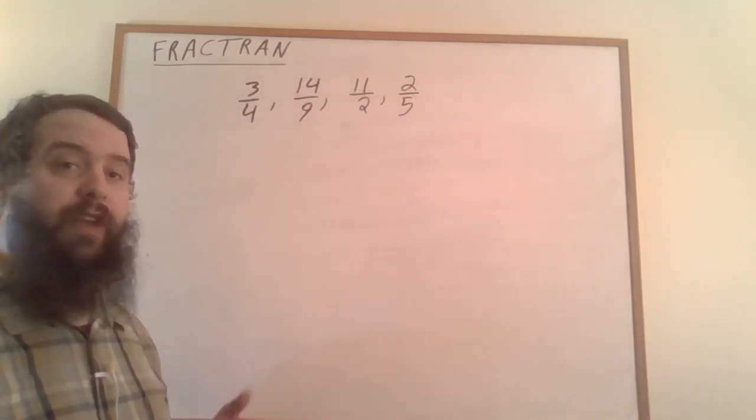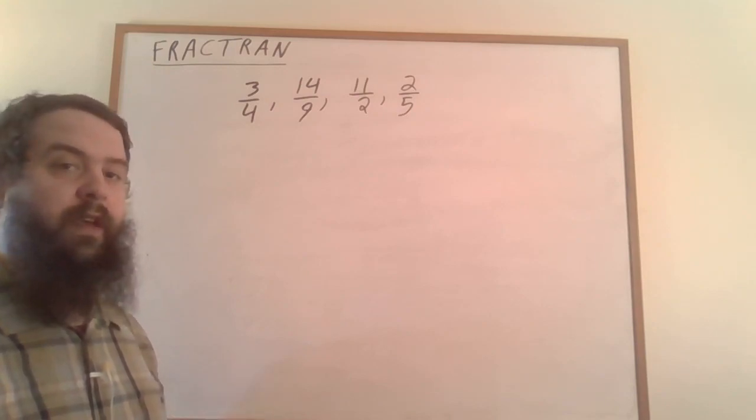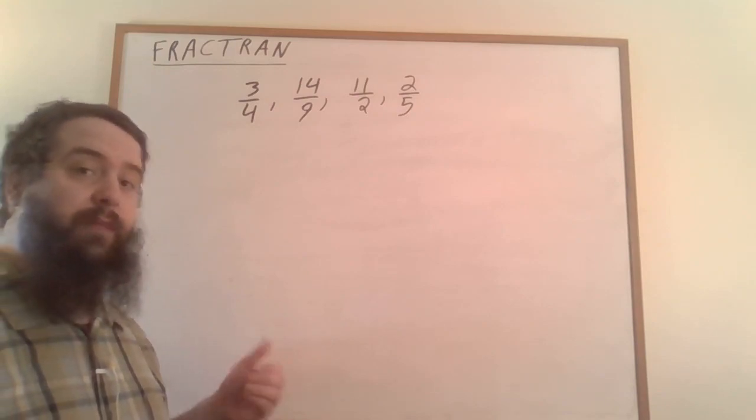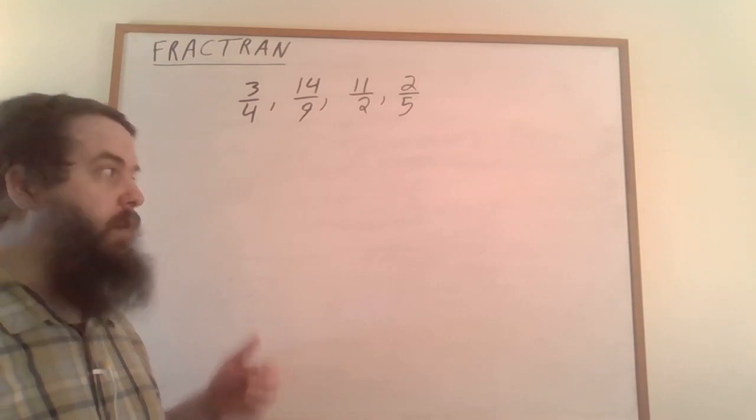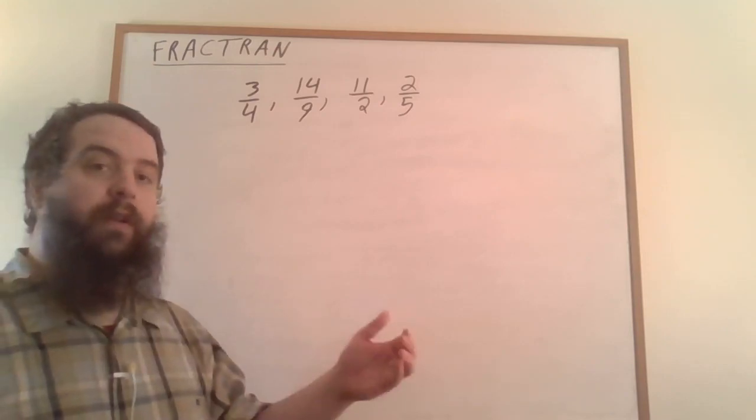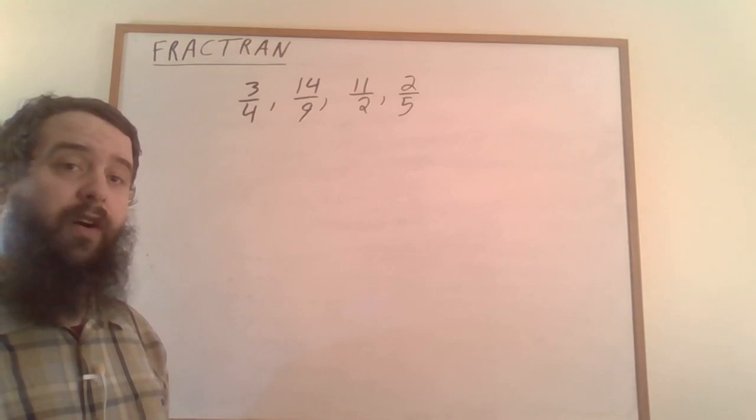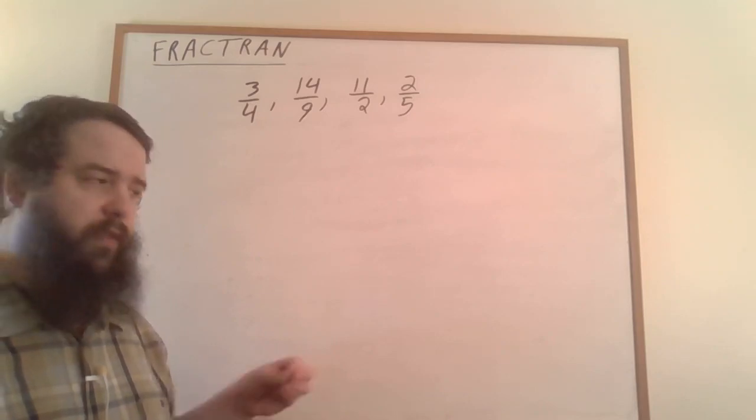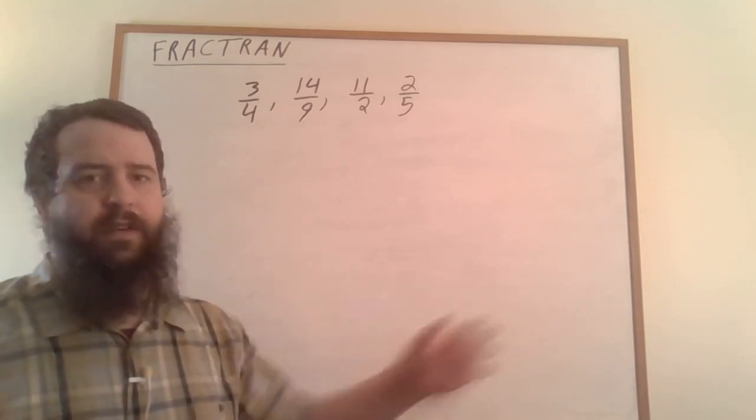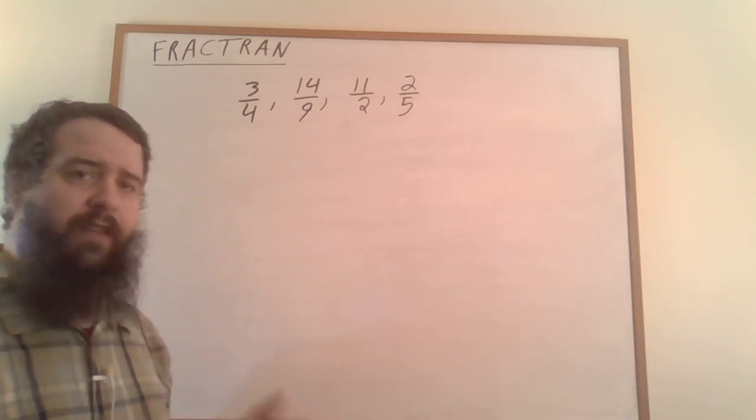A program in Fractran is a list of fractions. It takes in as input a natural number and hopefully spits out as output another natural number. It might also never halt—it could go into an infinite loop or some other infinite series of states and never give us an answer.